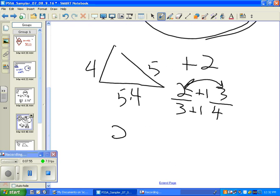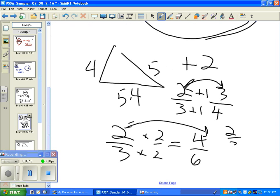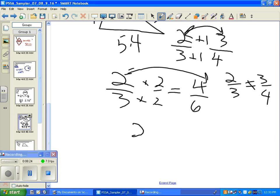However, if we take this 2 thirds and we multiply it by the same number, let's say 2 equals 4 sixths. Here, our relationship is the same. These numbers are the same. 2 thirds does not equal 3 fourths. However, we can say that 2 thirds equals 4 sixths.